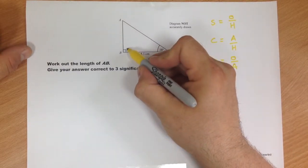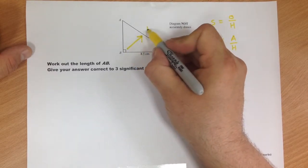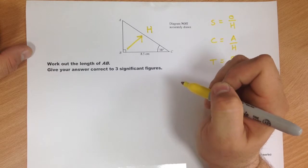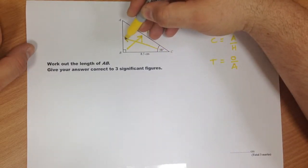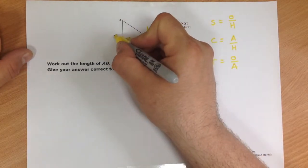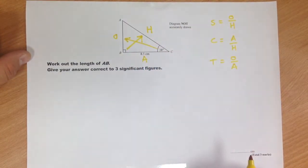And label the sides. I always start with the one opposite the right angle, which is the hypotenuse. It's the longest side of a right angle triangle. Then the angle we've been given, the side opposite the angle is the opposite, and the one that's left is the adjacent.